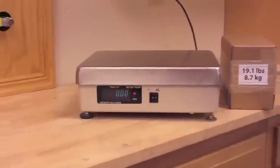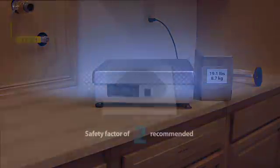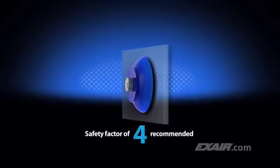For our demonstration, we're using a cardboard box that weighs 19.1 pounds, or 8.7 kilograms. A safety factor of two is recommended when the vacuum cup is positioned horizontally. A safety factor of four is recommended when the vacuum cup is positioned vertically. In this case, we're going to position it horizontally.